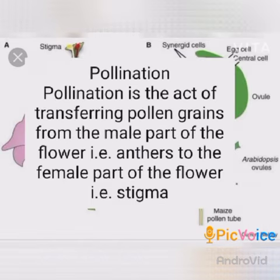Pollination: Pollination is the act of transferring pollen grains from the male part of the flower to the female part of the flower.